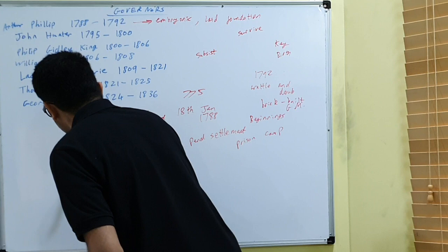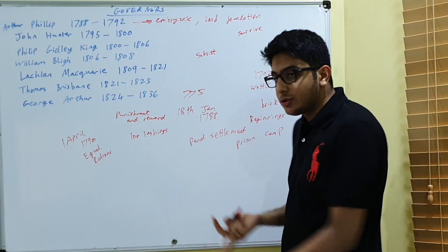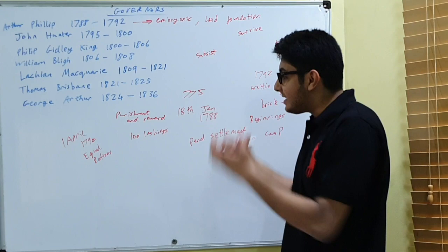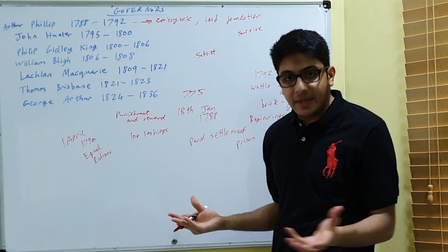For example, on the 1st of April 1790, he issued a proclamation allowing for equal rations. The convicts got the same amount of rations as the officers and the military personnel that were there. Therefore this limited potential for revolt and ensured that there were little deaths from starvation, ensuring the survival of the members within the penal colony.